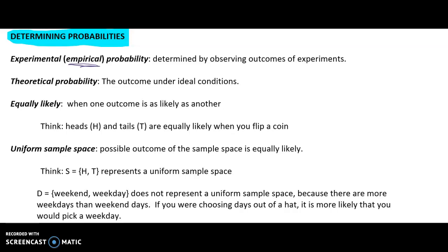Here are more vocabulary words for determining probabilities. First we have experimental or empirical probability — you determine this by observing outcomes of experiments. We could also find theoretical probability, which is the outcome under ideal conditions. When you have outcomes in a sample space that are all equally likely, they all have the same probability. For example, if you're flipping a fair coin, heads and tails are equally likely.